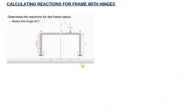Meaning we are going to have four unknown reactions. Now, you might be thinking this is going to be a statically indeterminate structure because we have four unknown reactions. But we have one hinge at point C, and because we have one hinge at point C, this is going to reduce the degree of indeterminacy from 4 to 3, because hinges reduce the degree of indeterminacy.